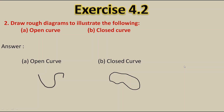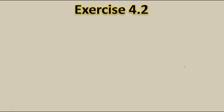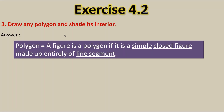Now let's move to the third question: Draw any polygon and shade its interior. To solve this question you should know first what is a polygon. A polygon is a simple closed figure made entirely of line segments. Simple means the figure should not cross itself, closed means the ends should be joined, and it should be made entirely of line segments. Such figures are called polygons.